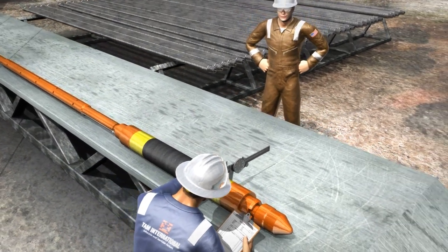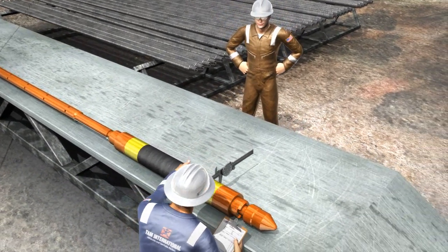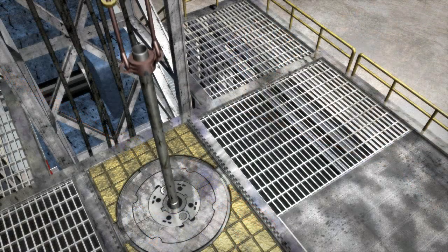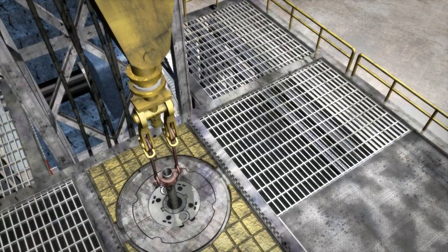The POSIFRAC straddle is configured for your specific application. It can be deployed with either coiled tubing or jointed pipe.